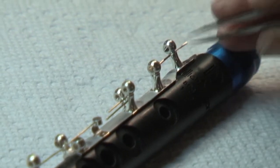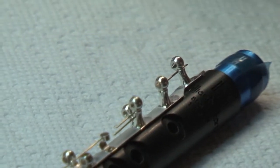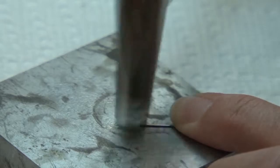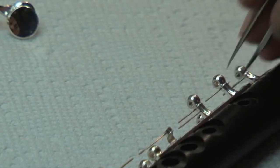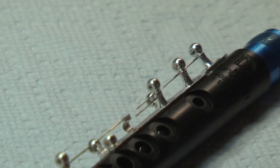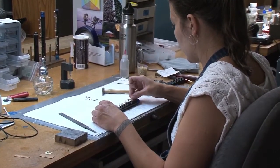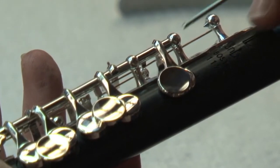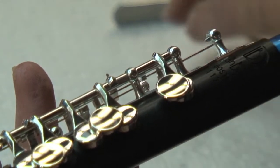Gold springs are cut to length. The end is hammered lightly and inserted into the small holes in the post. The spring tension is balanced before seating the pads.